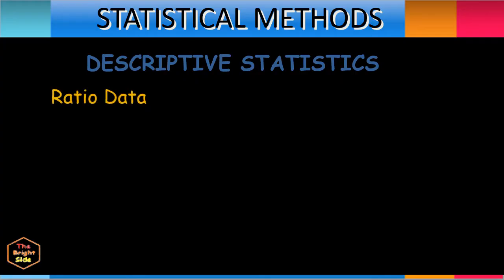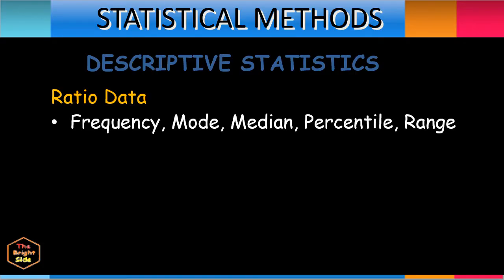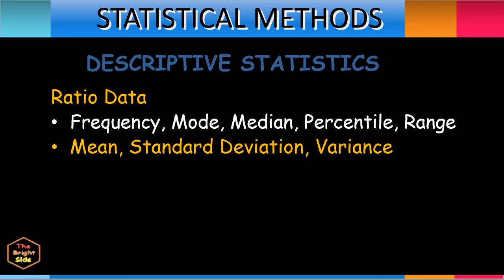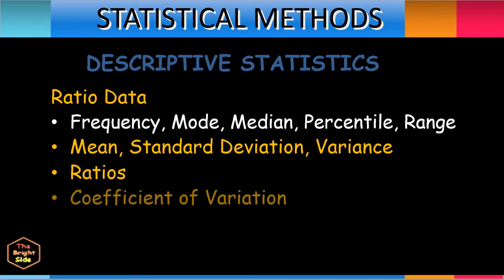For ratio data, the descriptive statistical tools include those used in interval data — frequency, mode, median, percentile, range, mean, standard deviation, and variance. Additional descriptive statistical tools for ratio data include ratios, used as a comparison of two data terms expressed as a fraction or quotient, and the coefficient of variation (CV), which is the ratio of the standard deviation to the mean. The higher the CV, the greater the level of dispersion around the mean; it is generally expressed as a percentage. The lower the CV, the more precise the estimate.